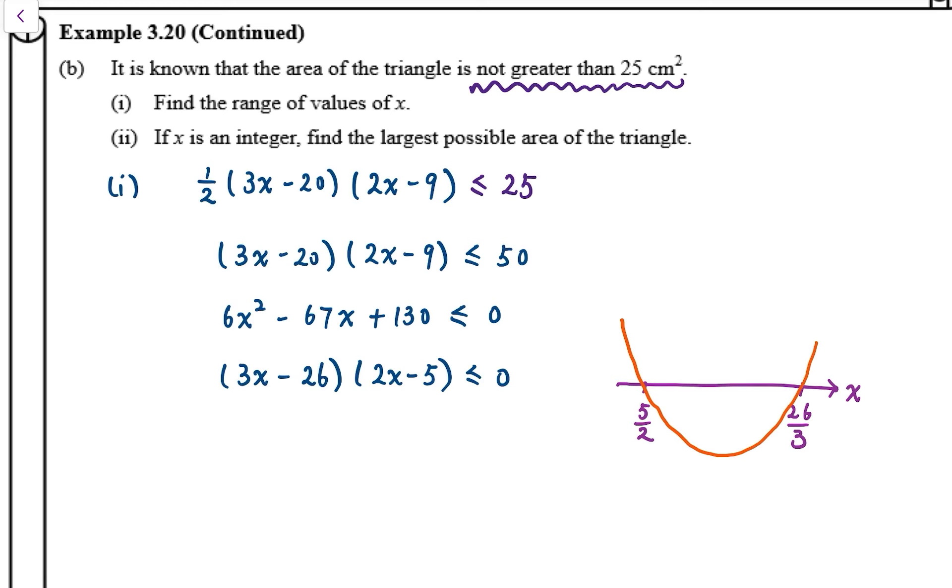And we are looking at the part of the graph that is equal to or less than 0. So we are looking at the lower half of the graph, and the values of x should be in between 5 over 2 and 26 over 3.